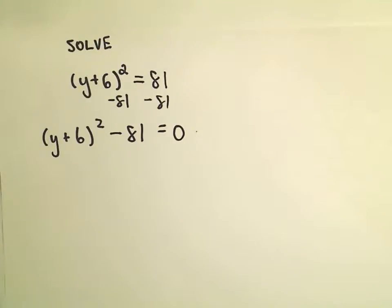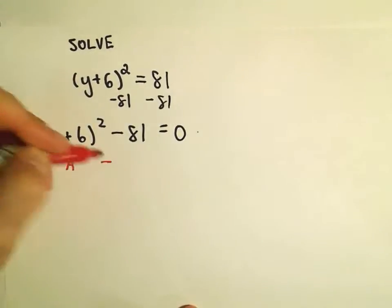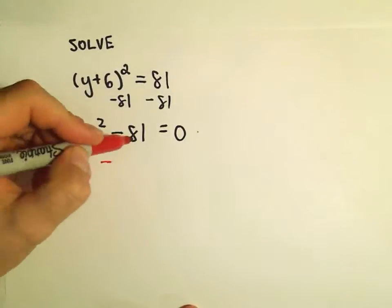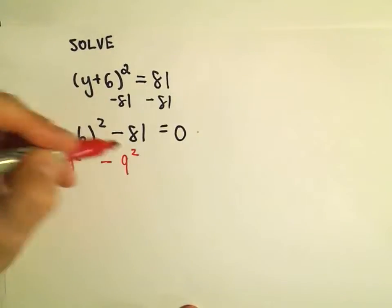But to me, when I see this, this is really a difference of perfect squares. I see something squared, there's my minus sign, and then I see something else squared, namely 9 squared.